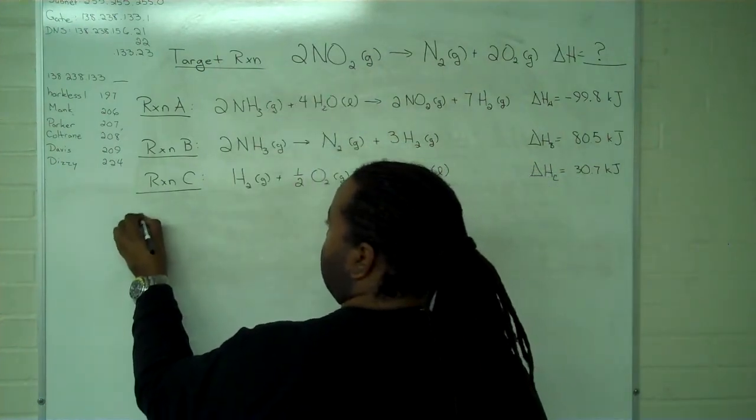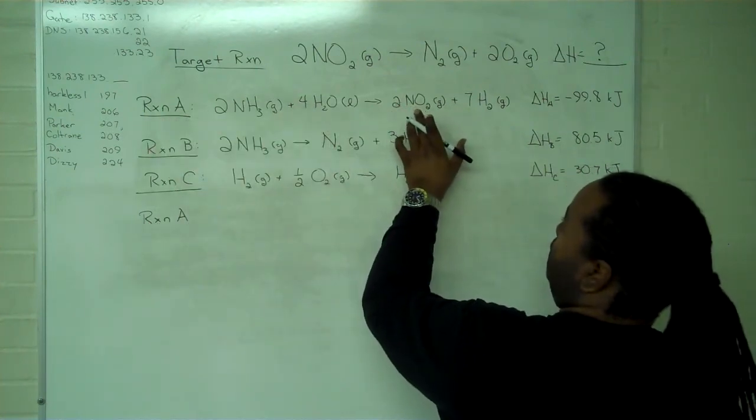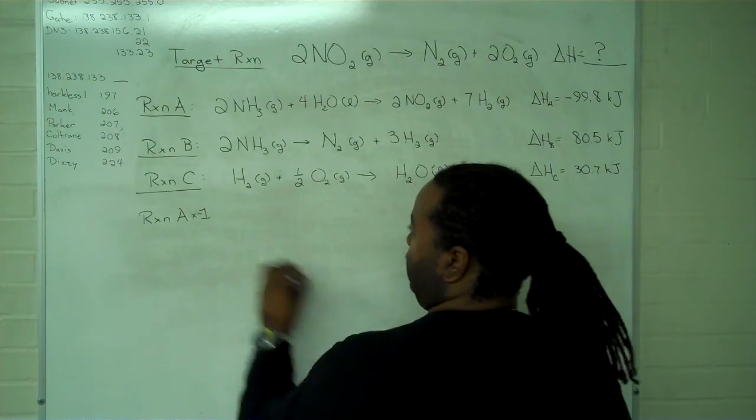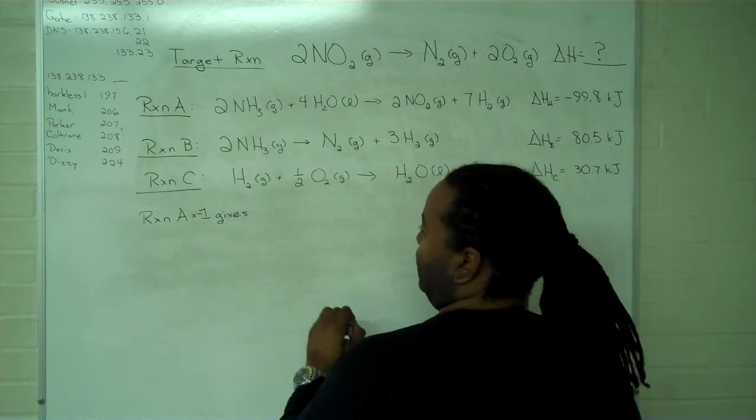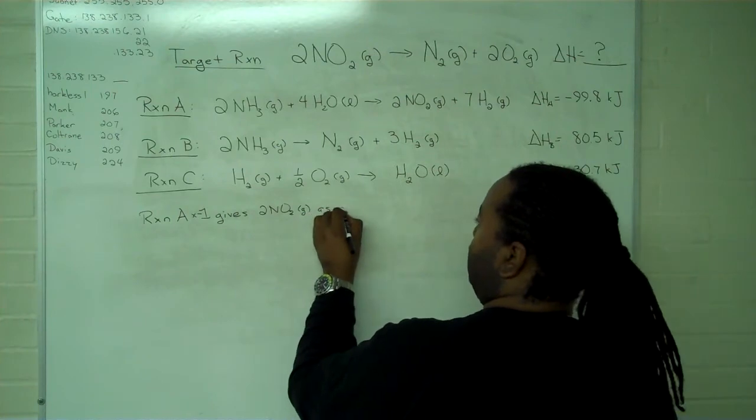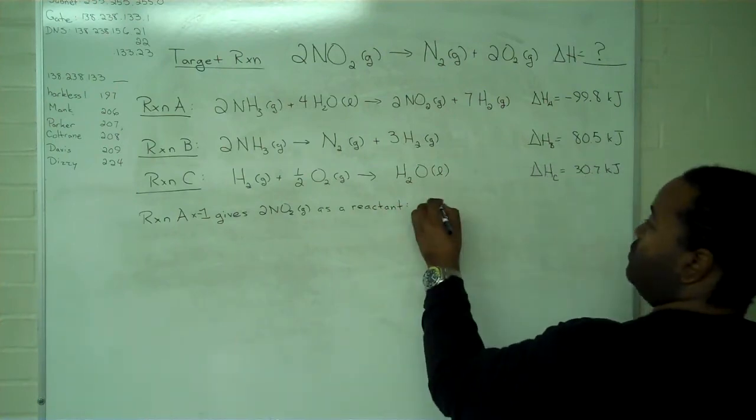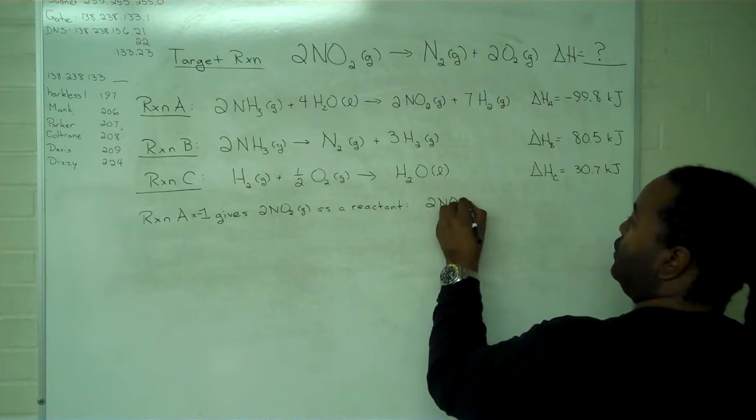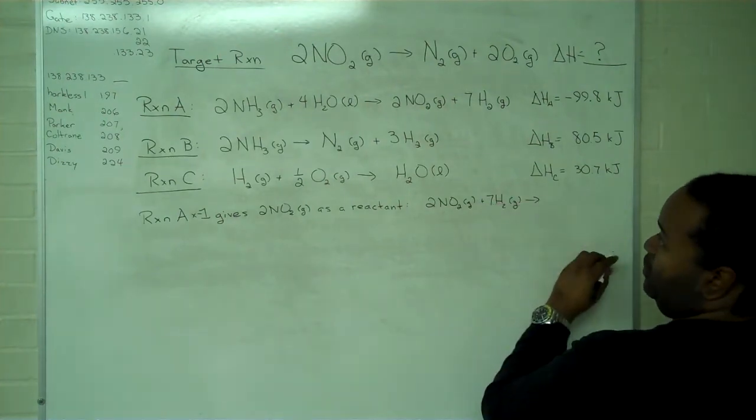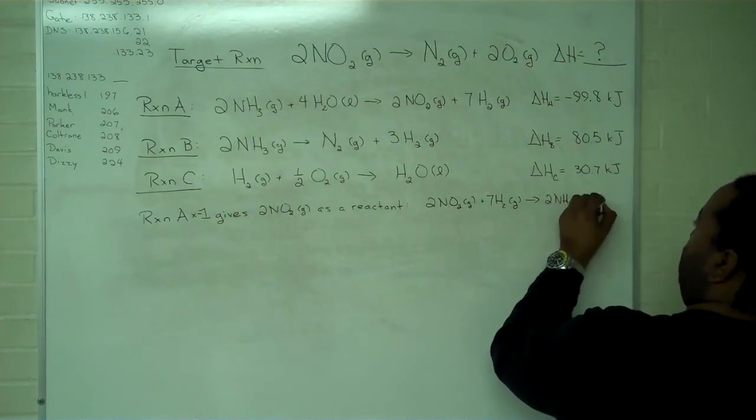So the first thing we want to do is get our NO2 in the correct place. And if I take reaction A and multiply by a negative one, effectively reversing everything, I'll have two moles in the correct location. So reaction A times negative one gives two NO2 gas as a reactant. This gives me two NO2 gas plus seven hydrogen gas yields two ammonia and four water.